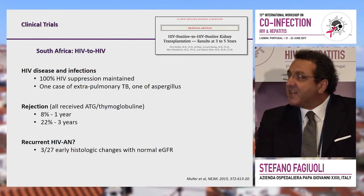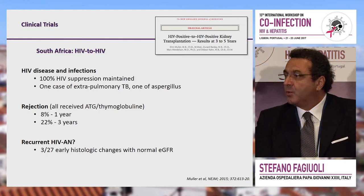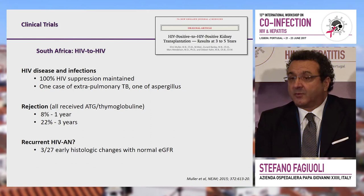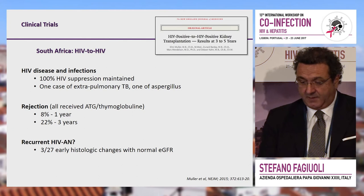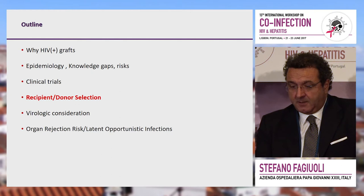Particular attention should be drawn to the rejection rate of 22% over three years, which is slightly higher than expected in this category. Only three out of 27 patients had histological recurrence of HIV nephropathy. We need to learn how to match donor and recipient in this specific setting.